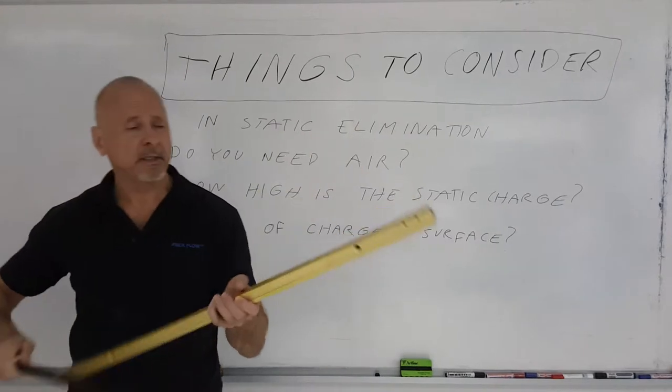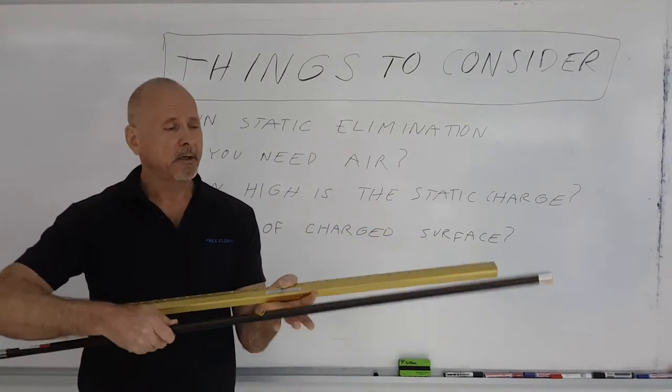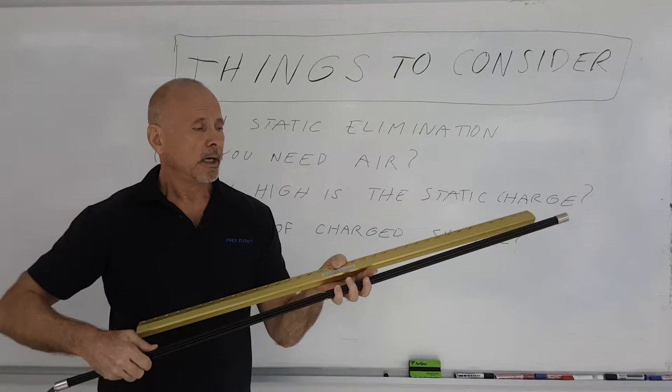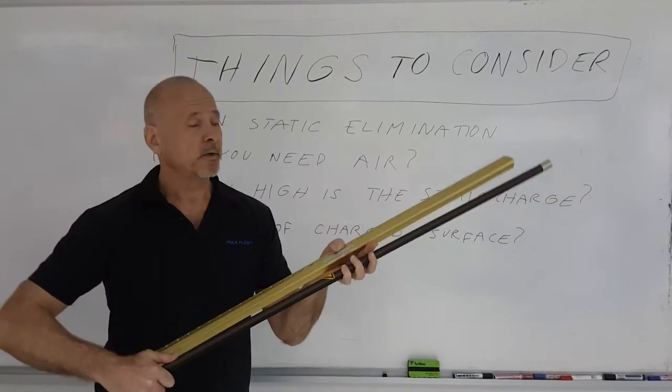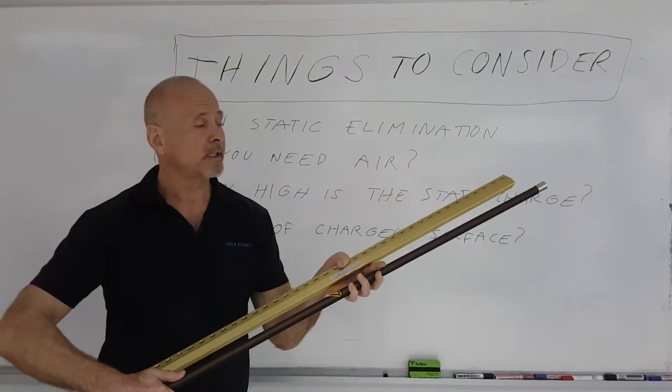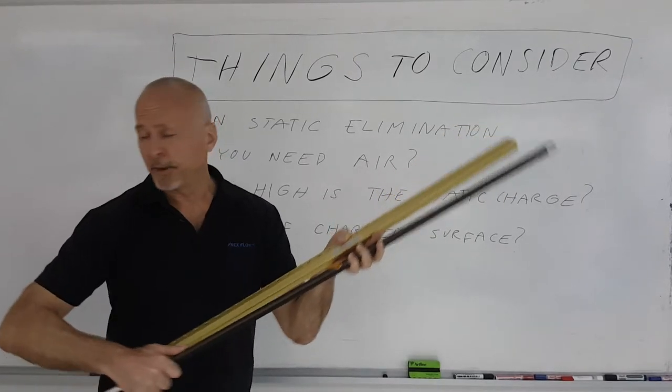This is an air knife. This is one of the blow-off products you can combine with a static eliminator. It's ideal, for example, in automotive industry for blowing off Class A surfaces because you get a nice even flow all the way along the unit.